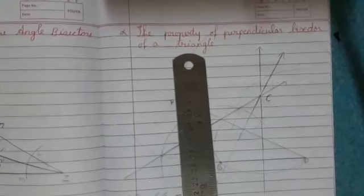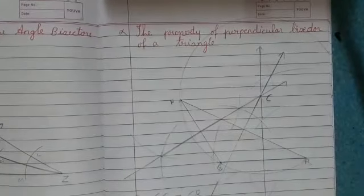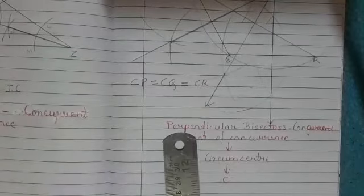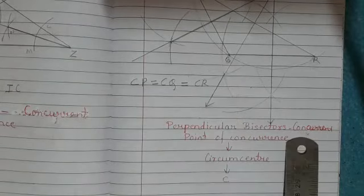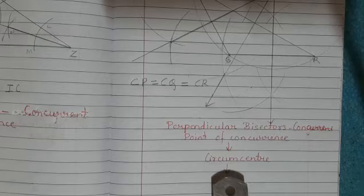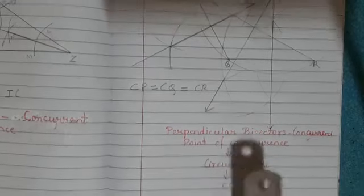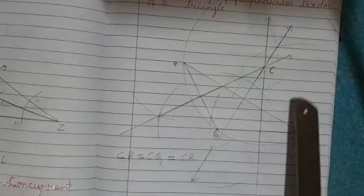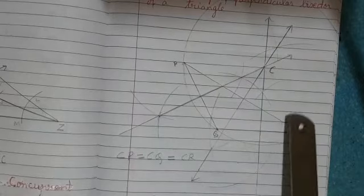We had drawn perpendicular bisectors of the three sides of the triangle, and we learned that the perpendicular bisectors of the triangle are concurrent to each other. The point of concurrence is called circumcenter — because we get a circle outside it which joins the vertices. So the point of concurrence is called circumcenter and it is shown by letter C.